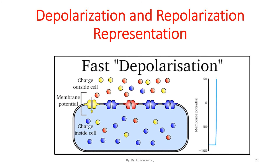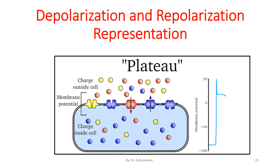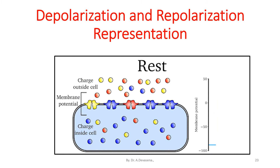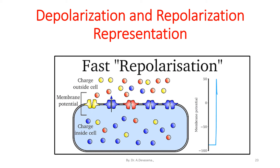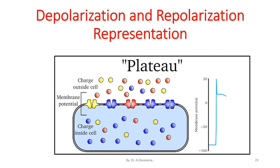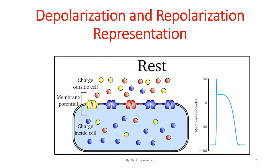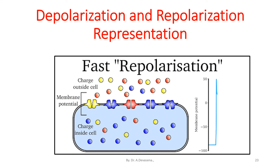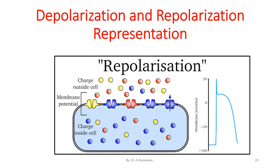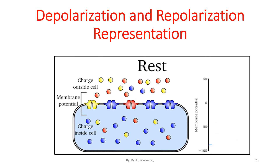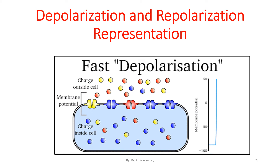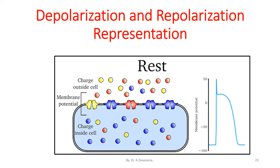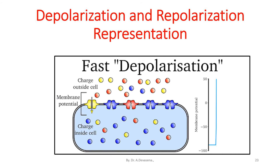With the potassium ion channels open, the membrane begins to repolarize back toward its resting potential. The repolarization typically overshoots the resting potential to about minus 90 mV; this is called hyperpolarization. Hyperpolarization prevents the neuron from receiving another stimulus during this time.